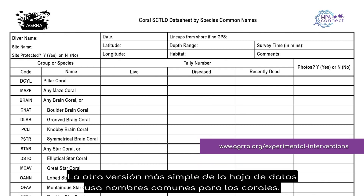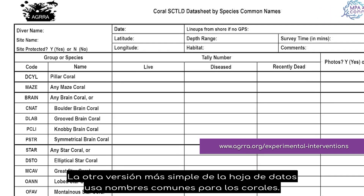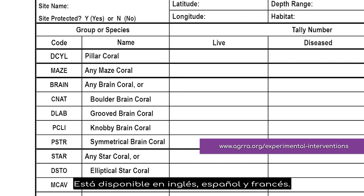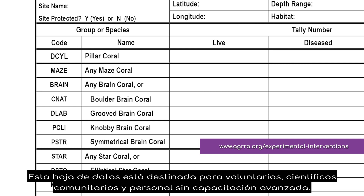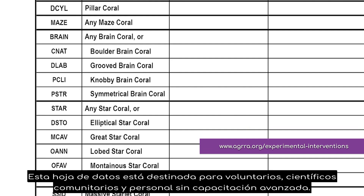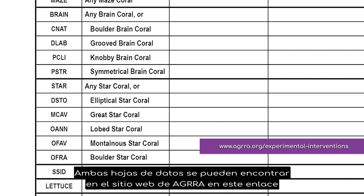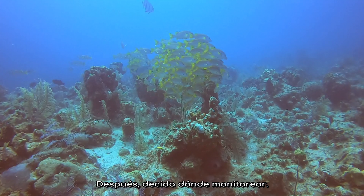The other, simpler version of the data sheet uses common names for the corals. It's available in English, Spanish, and French. This data sheet is intended for use by volunteers, community researchers, and staff without advanced training. Both data sheets can be found on AGRA's website.